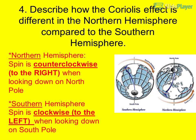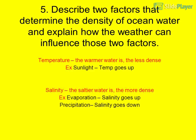Question 4: Describe how the Coriolis effect is different in the northern hemisphere compared to the southern hemisphere. Northern hemisphere spin is counterclockwise — to the right — when looking down on the north pole. Southern hemisphere spin is clockwise — to the left — when looking down on the south pole.